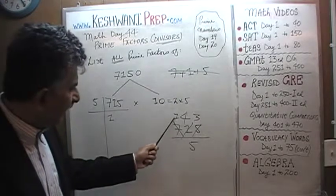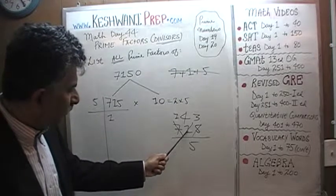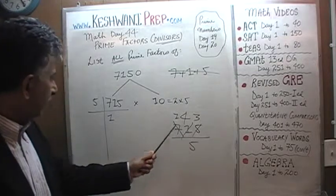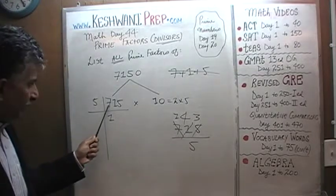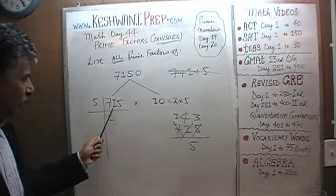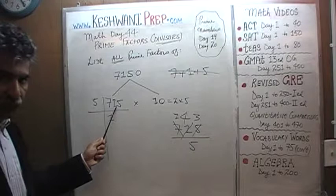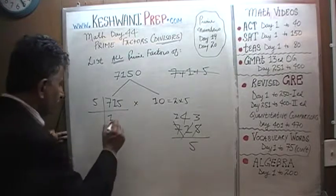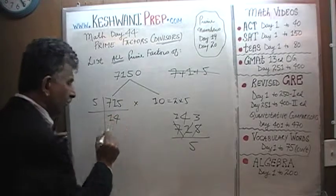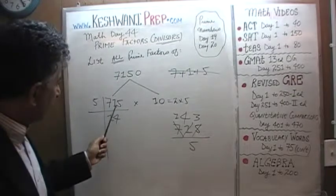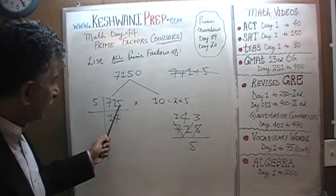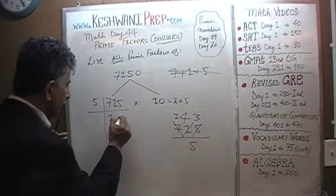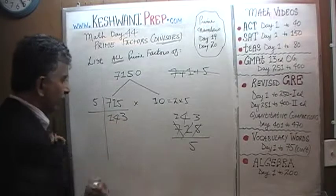Let me redo that. 7 has one 5. The remaining 2 goes and joins the 1 to become 21. 21 has four 5s. Four 5s are 20. The remaining 1 goes and joins the 5 to become 15, and 15 has three 5s. So 715 ÷ 5 = 143.